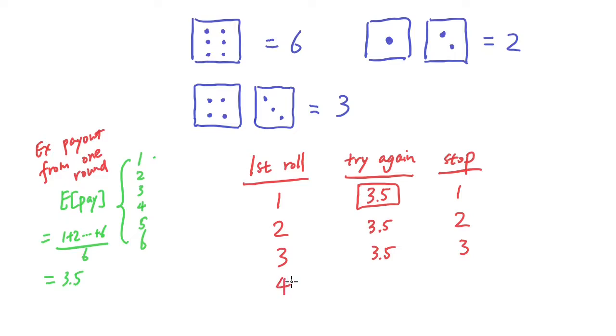If you got a four on the first row and you try again, you are expected to make 3.5. But if you stop, you actually have four dollars. So four is better than 3.5.